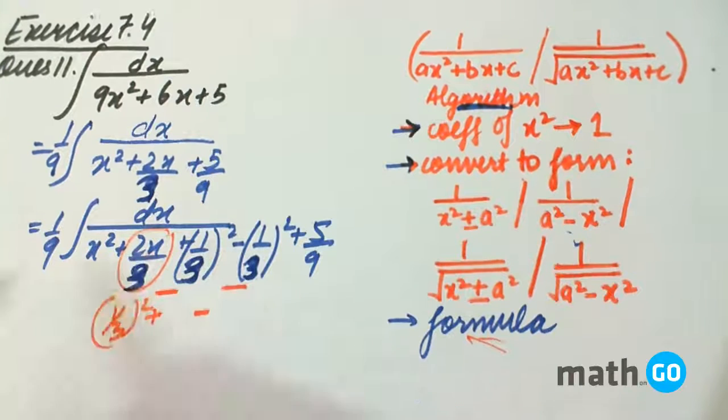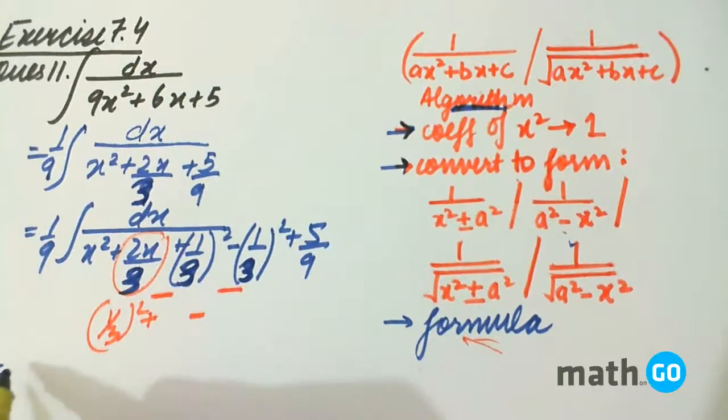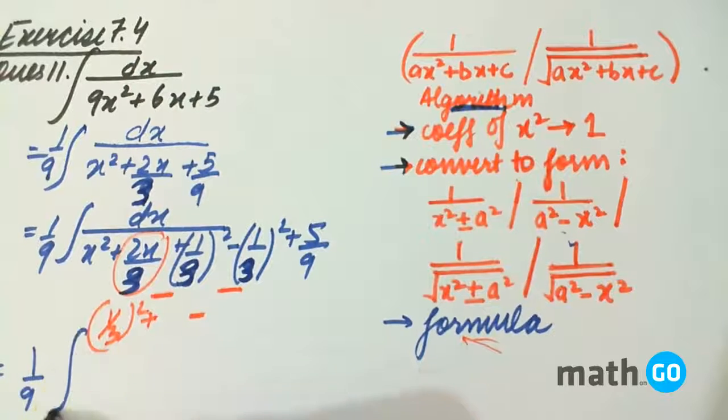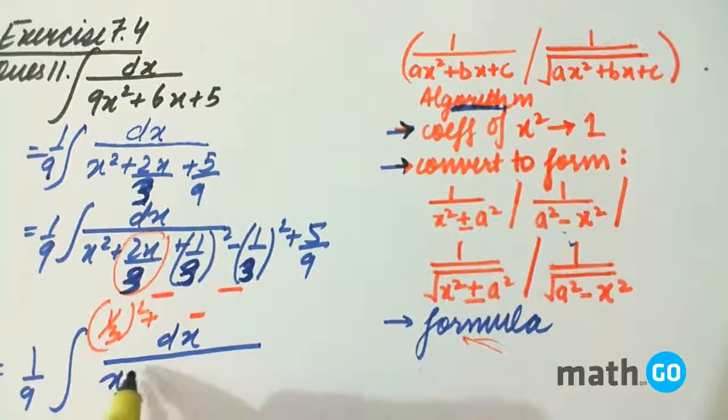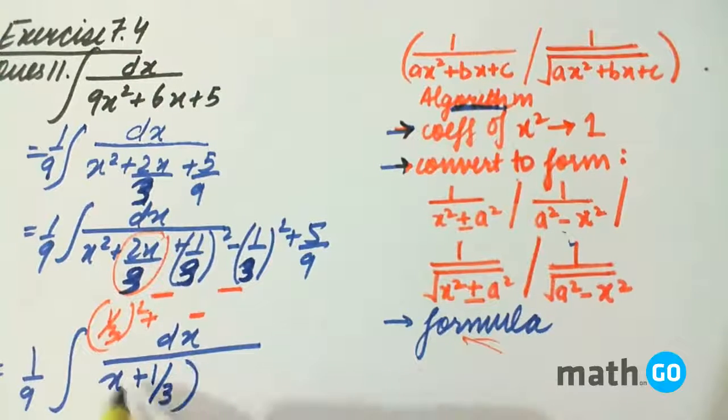As done in this, we can write it as 1/9 integral of dx upon (x + 1/3) whole square